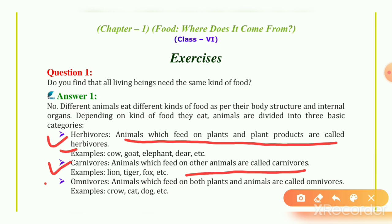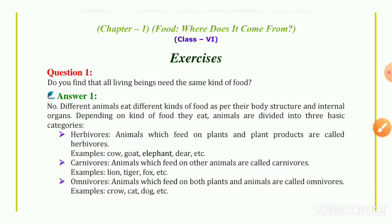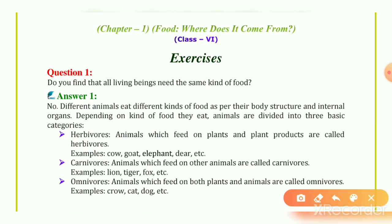Last of them, Omnivores. Animals which feed on both plants and animals are called Omnivores. Omnivores का meaning है कि जो भी animals हैं वो दोनों को खाता है — plants को भी खाता है, animals को भी खाता है। Examples of Omnivores: Crow, Cat, Dog.